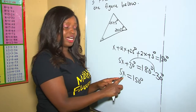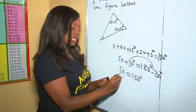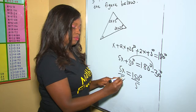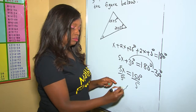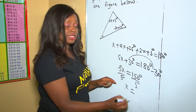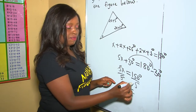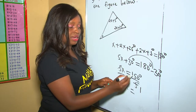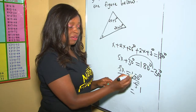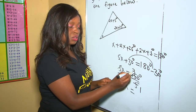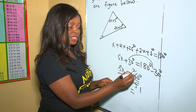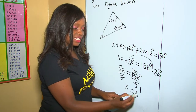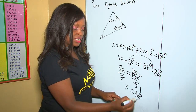Since 30 crosses to the other side it becomes subtraction: 5x = 180 − 30 = 150 degrees. We divide both sides by 5, and x = 150 ÷ 5 = 30 degrees.